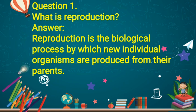Question number 1: What is reproduction? Answer: Reproduction is the biological process by which new individual organisms are produced from their parents. Reproduction ek biological process hai jis se new individuals produce hote hain parents ke through.